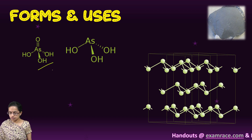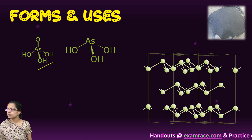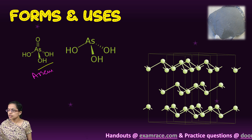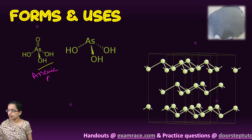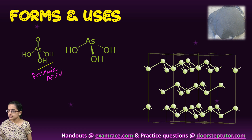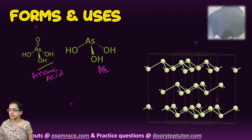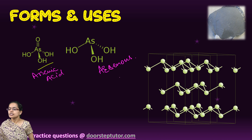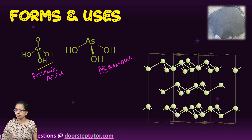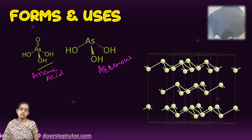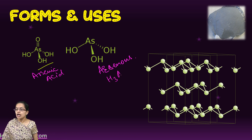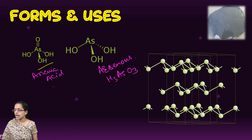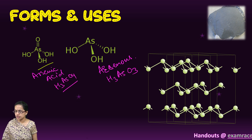There are various forms in which arsenic is found. It could be arsenious acid or arsenic acid. Arsenious acid has three atoms of oxygen, whereas arsenic acid has four atoms of oxygen.